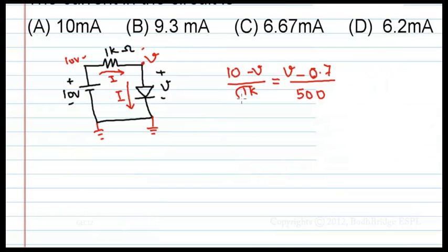This 1k is nothing but 1000. So, 500 goes for two times. Therefore, 10 minus V equal to 2V minus 1.4.